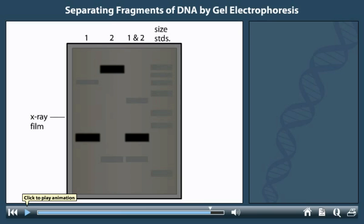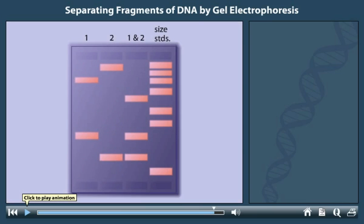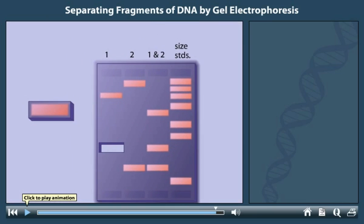Knowing which bands contain the sequence of interest, an identical agarose gel can be created, and a band of interest can be cut out of the gel. The DNA in this band can then be manipulated for further analysis.